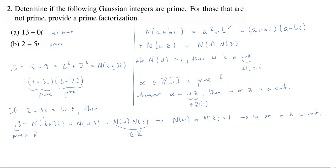But we set up above, if the norm of a Gaussian integer is 1, then that's a unit. So this implies w or z is a unit.